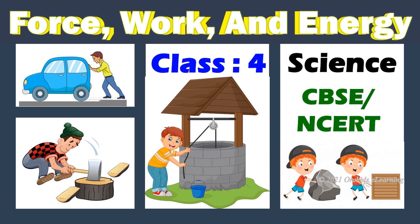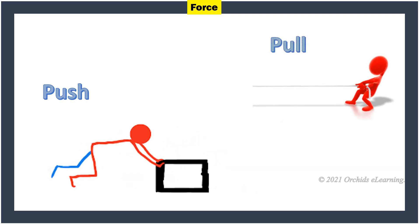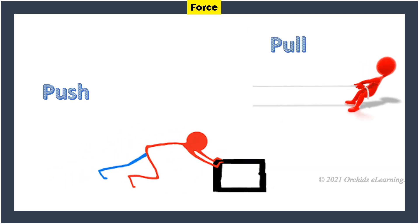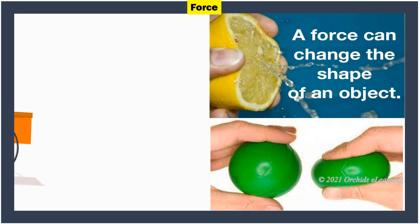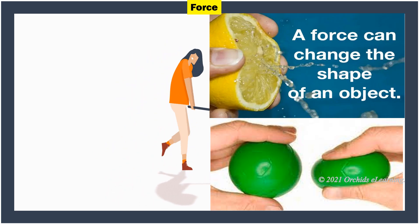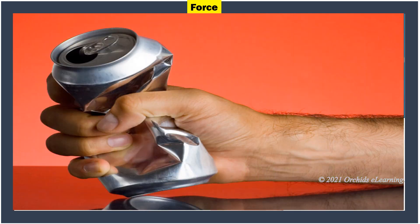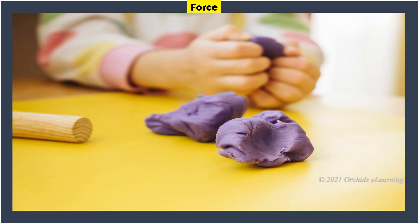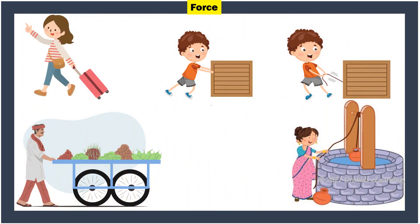What is a force? A push or pull acting on an object is called force. We can move objects or change their shape by applying force. For example, if you squeeze a plastic bottle, it changes the shape of the bottle. When you play with clay, you apply force to mold it — this also changes the shape of the clay. Are these people pushing or pulling? Write the correct answer under each image.